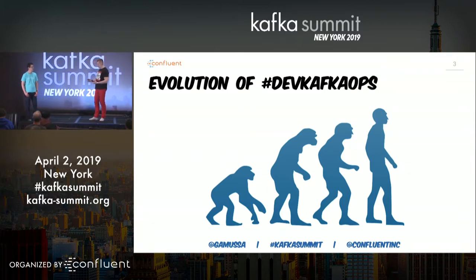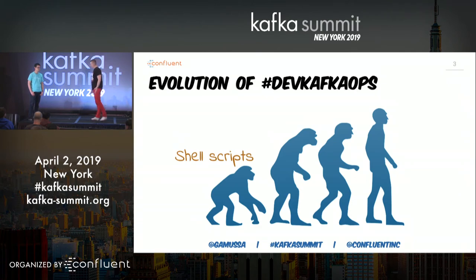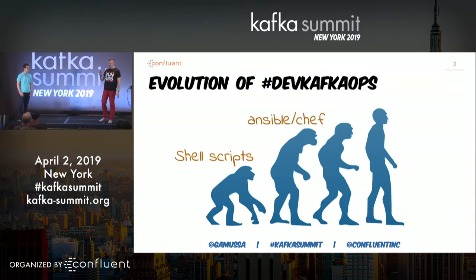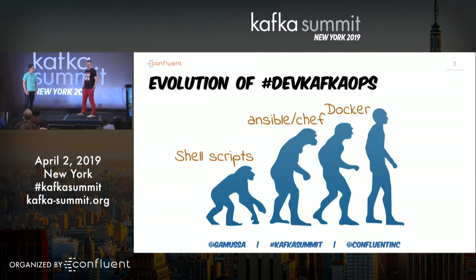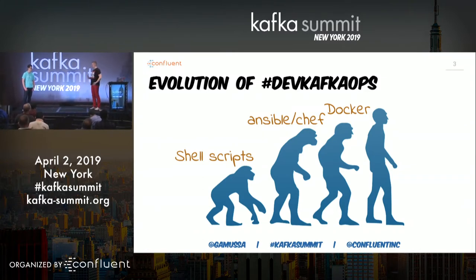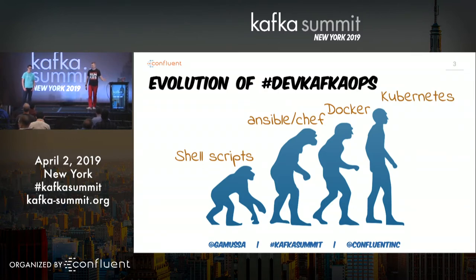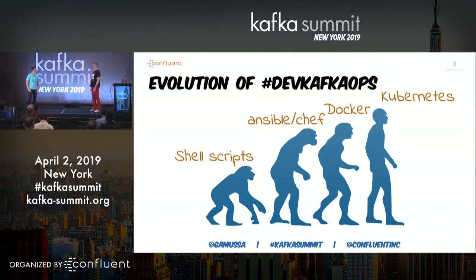The culture comes from the way we operate our software. You start with simple bash scripts — start Kafka.sh, start ZooKeeper.sh. You master that approach and move to more advanced things like configuration management. Then Docker came into play, letting us package software in immutable containers. And finally, we reach the stage of homo erectus Kubernetes Kafka DevKafCops, where you can walk freely.